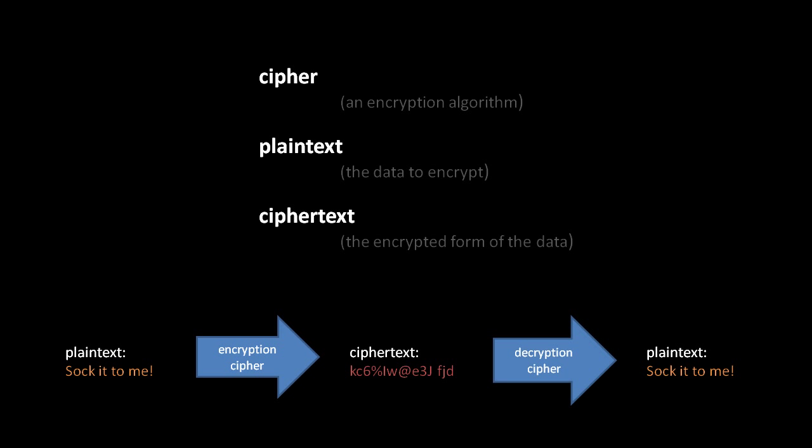Ideally, the ciphertext should appear to anyone without the key to decrypt the ciphertext, it should appear to be total garbage, it should just look like random noise. Of course, it's not actually random, it's deterministically generated by the encryption algorithm, it just has the appearance of being random, because it's so scrambled.